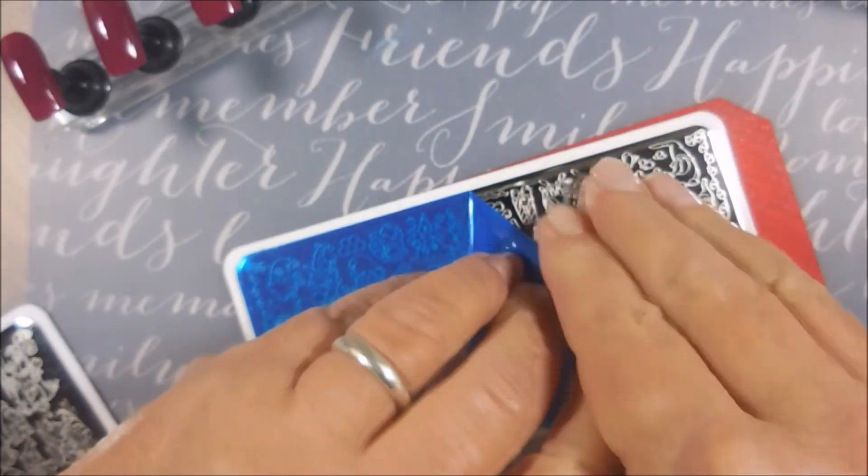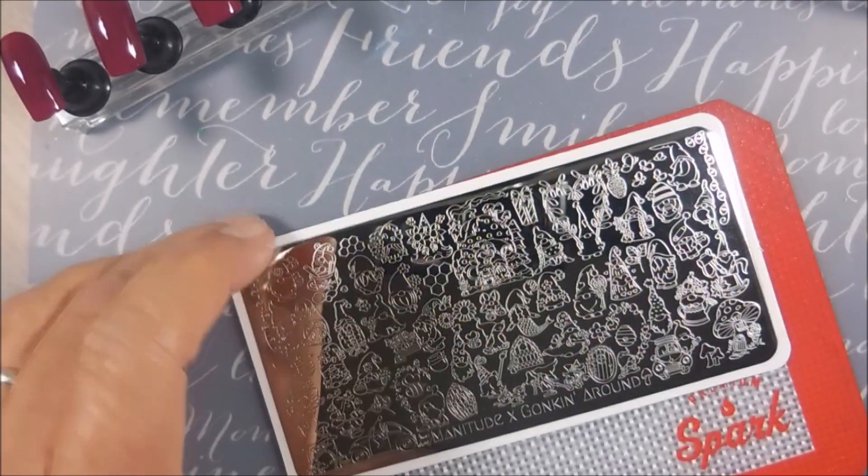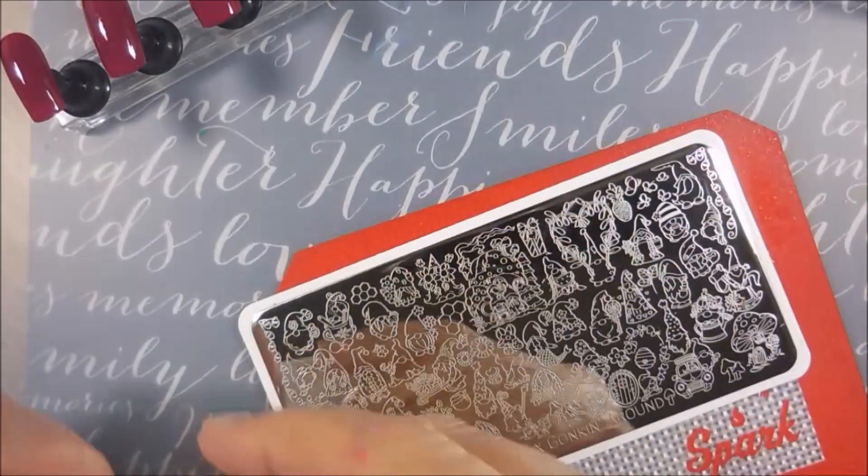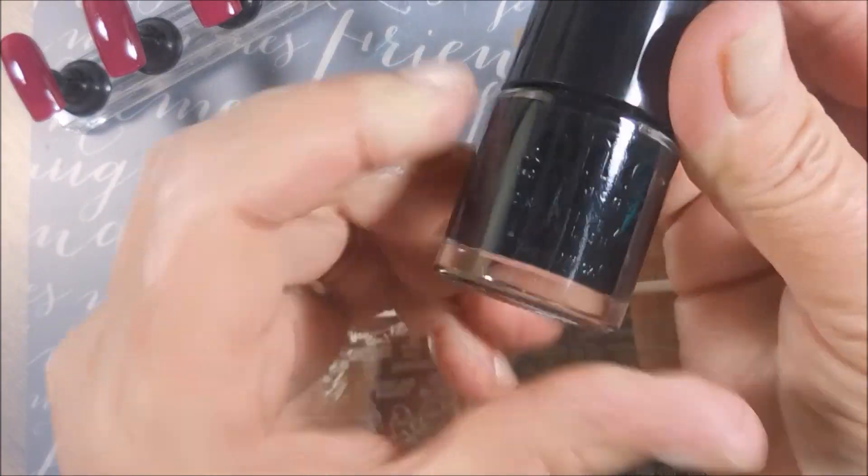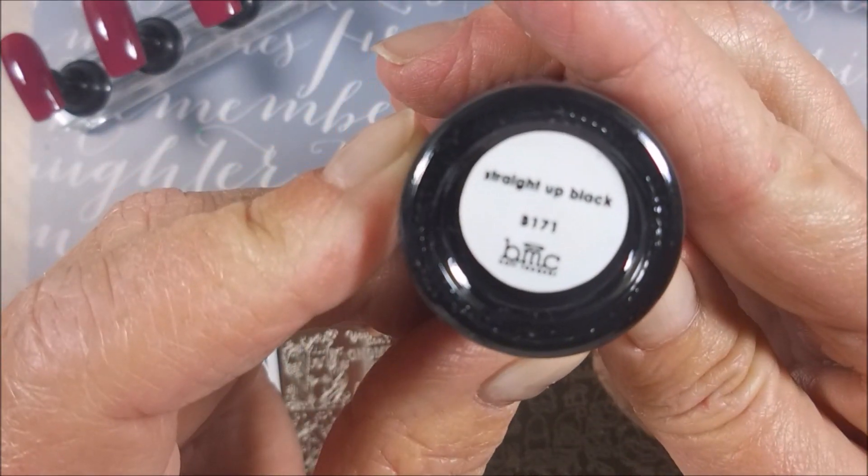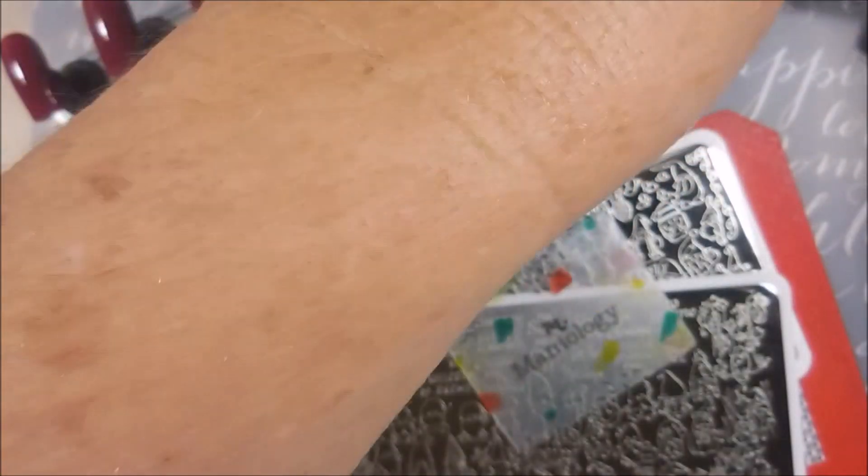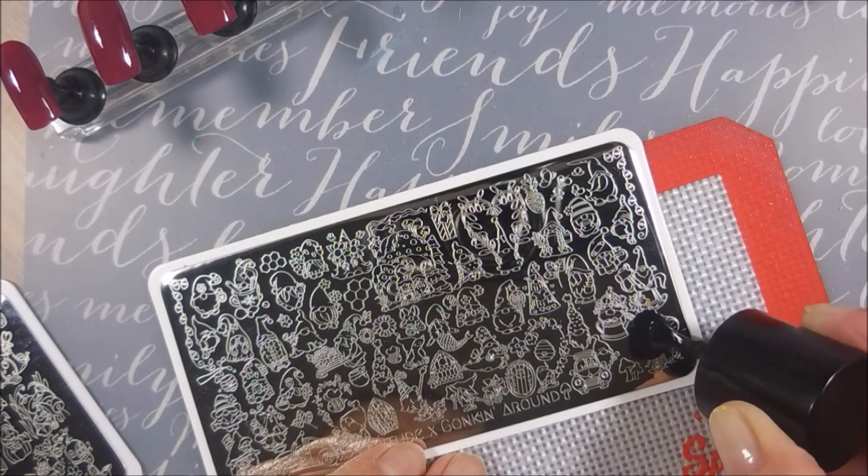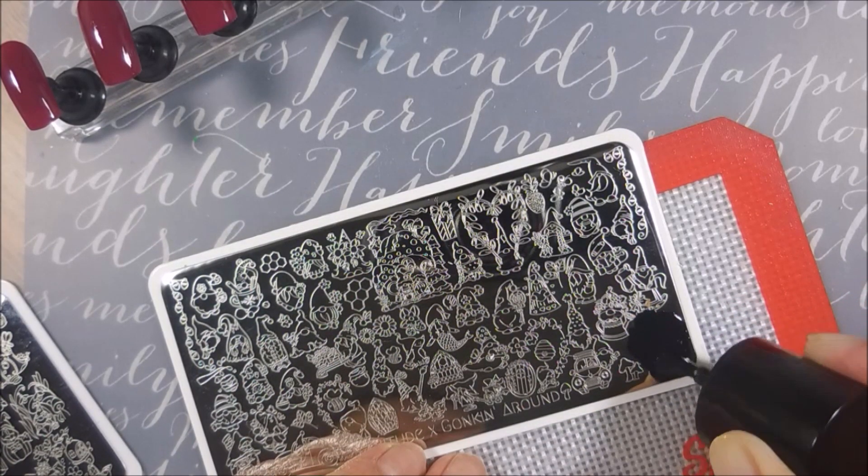Get them ready. I do have some Clear Jelly Stamper Plate Cleaner coming, I'm very excited. And we're going to give that a try. Today I'm going to start off with Maniology's Straight Up Black. I've got a Maniology scraper and a whole bunch of little cube stampers out today because we're decaling. I'm making a bunch of decals.